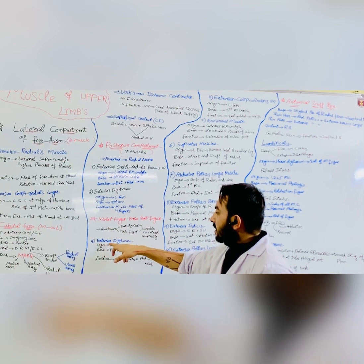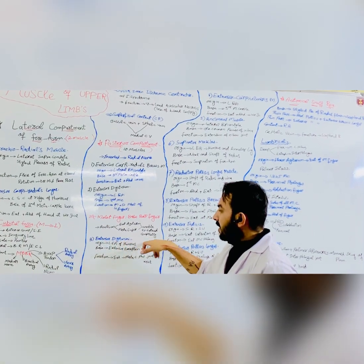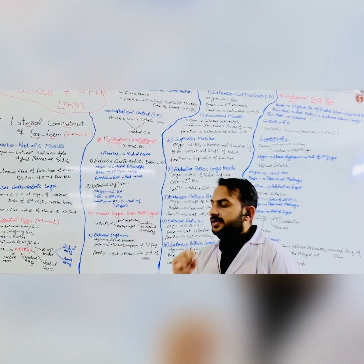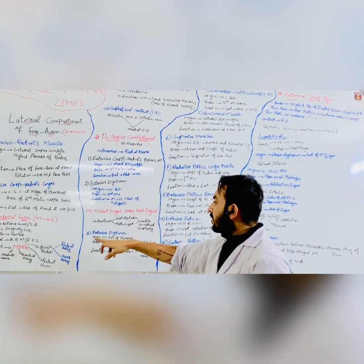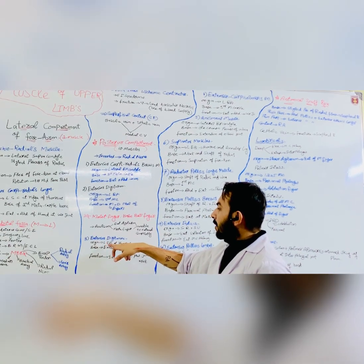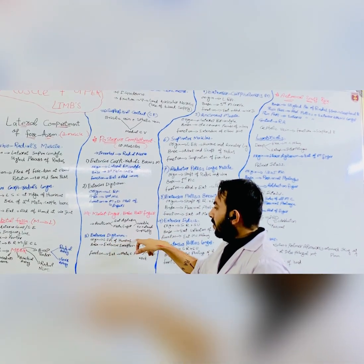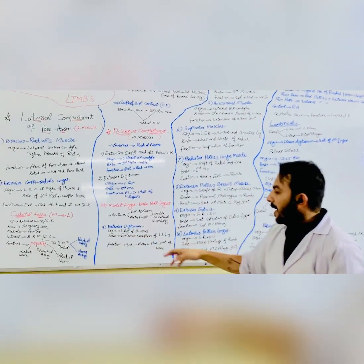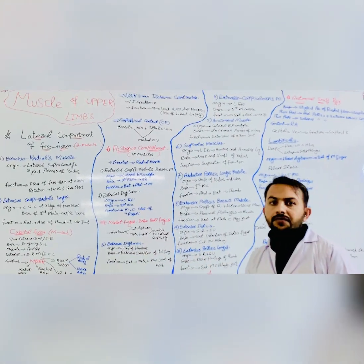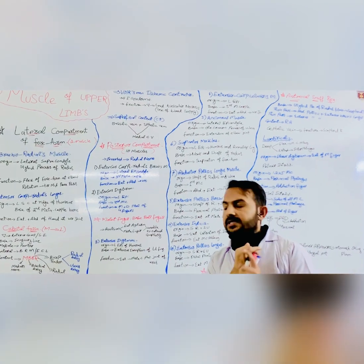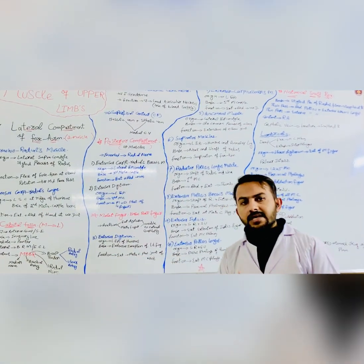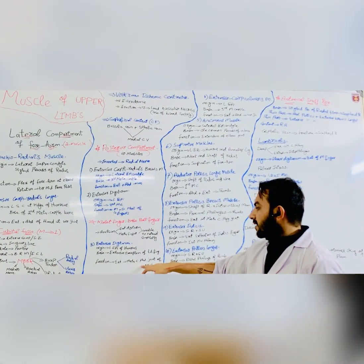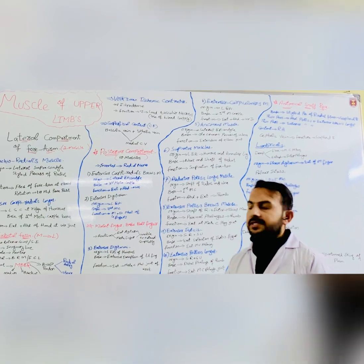The third muscle is the extensor digiti minimi. Digiti minimi refers to the small finger. Its origin is the lateral epicondyle of the humerus. Its insertion is the extensor expansion of the little finger. Its function is extension and medial phalangeal joint movement of the little finger.